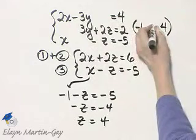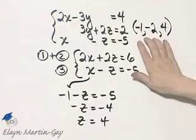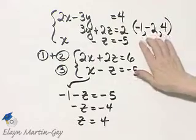If you do so, you'll find that y is negative two. So we have an ordered triple solution and here it is.